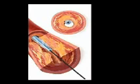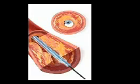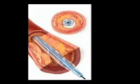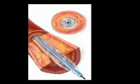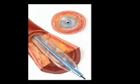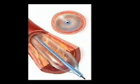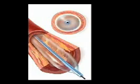A balloon dilation catheter is then railed on the guide wire and positioned within the atherosclerotic plaque. This balloon is then inflated, resulting in widening of the narrowed coronary artery.